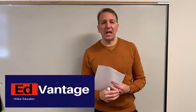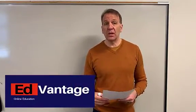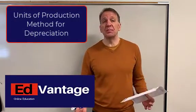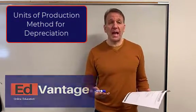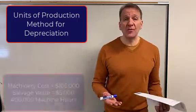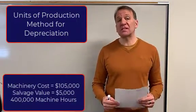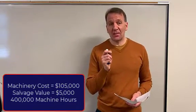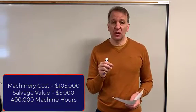Hi class, I'm Matt Fisher, your accounting professor. In today's video we're going to go over the units of production method. We're using the same information: our value for the asset, the machinery, was $105,000, we have a salvage value of $5,000, but now we're going to add something else because we don't need the useful life for units of production.